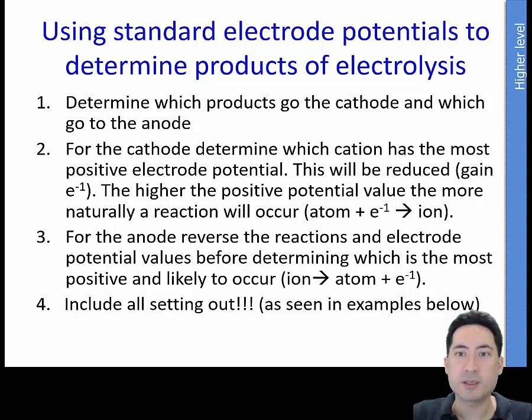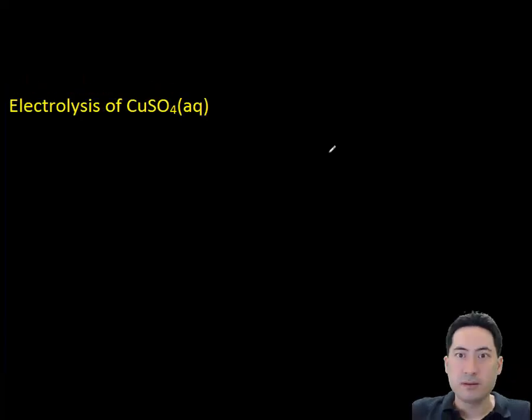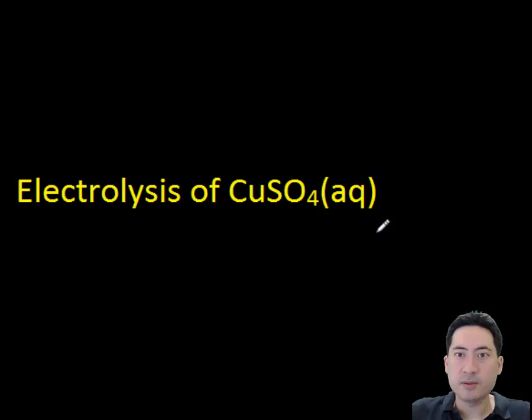So this is the general attack plan that we have. Determine which products go to the cathode and go to the anode. And then write out the equations for these. Once you've done that grab the most positive one. And that will be the electrode potential for that. Do the same thing for the anode. Write the correct equation out. Which means it may need to be reversed. The electrons coming off. And again choose the most positive value. And that's the one that's most likely to occur.